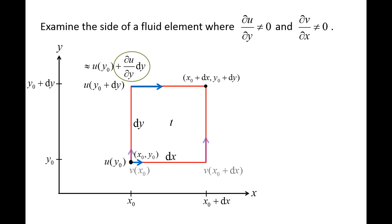The y component of the velocity, shown with purple arrows, varies in the x direction. On the left side of the fluid element, the y component of the velocity is v at x0, and on the right side it is v at x0 plus dx. Since dx is very small, we can use a Taylor series approximation to rewrite the velocity on the right side as v at x0, plus partial v partial x times dx. Notice that the difference in velocity between the right and left sides of the fluid element is given by partial v partial x times dx.